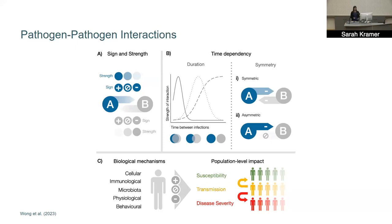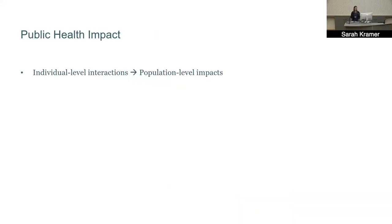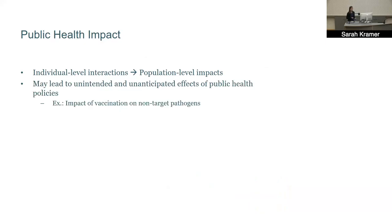A really key point is that even though these interactions occur at the level of the individual, they can sometimes have pronounced population-level impacts. When this happens, we may end up seeing unintended and sometimes unanticipated effects of public health policies. It's really important to understand these interactions so we can better anticipate what those outcomes will be.